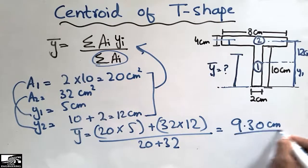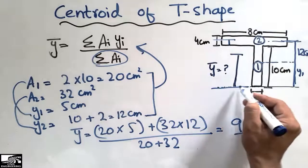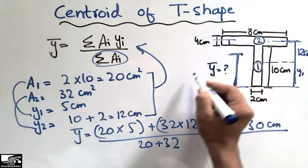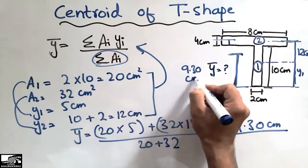That means from the bottom, the centroid lies at the distance of 9.30 centimeter.